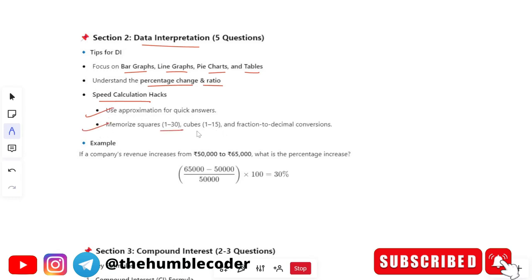Memorize squares 1 to 30, cubes 1 to 15. These basic things should be there in your mind because you are not going to attempt just for this Cognizant right. You are going to appear for other placements also. So these things should be there in your mind.